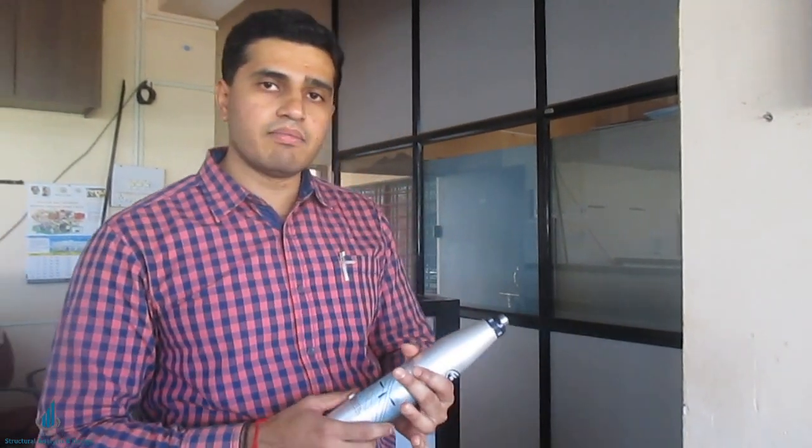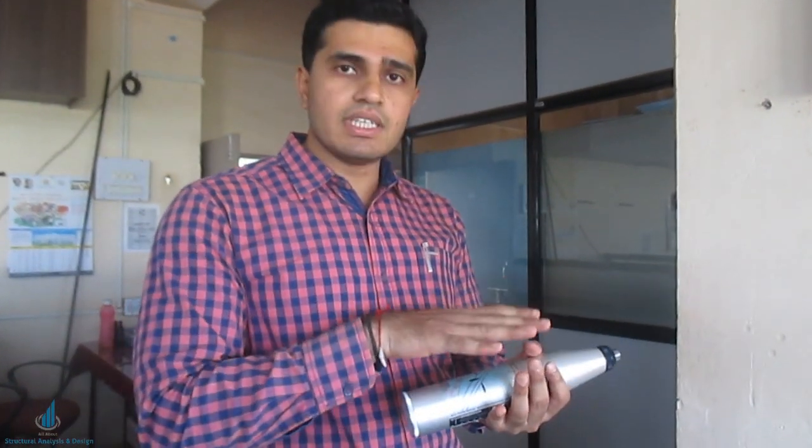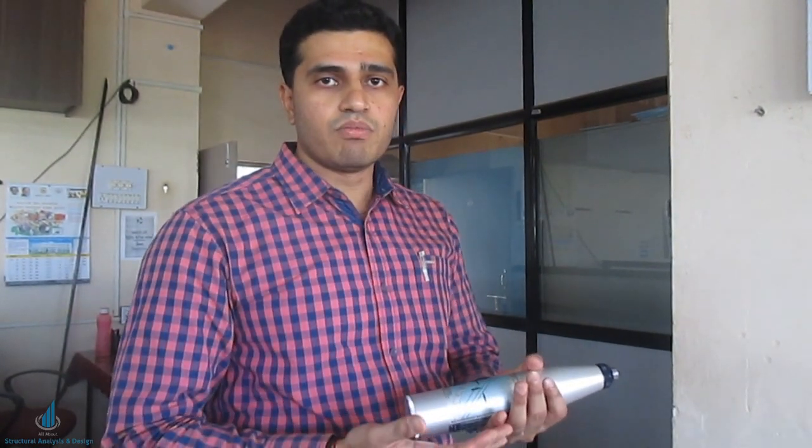And you have to remember that you have to calibrate the hammer first. How to calibrate means you have to take the standard cube of concrete that is 150 mm into 150 mm into 150 mm. Then you have to test with this rebound hammer as well as the compression testing machine.